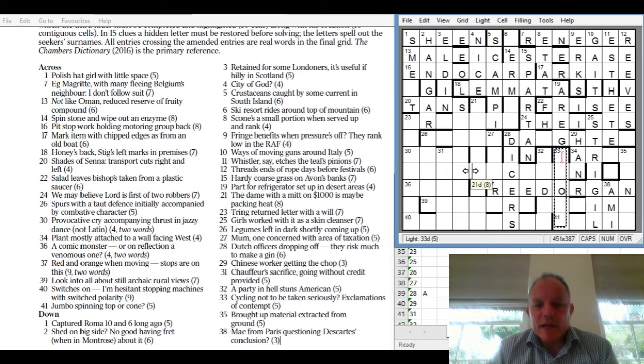33 down: Cycling not to be taken seriously, exclamations of contempt. POOS would be exclamations of contempt. 41: Jumbo spinning top or cone. A cone is a type of solid, so cone question mark could mean solid. Jumbo can be OS for outsize, spinning, and LID is the top. SOLIDOS.